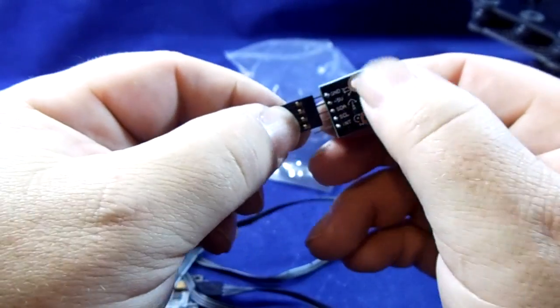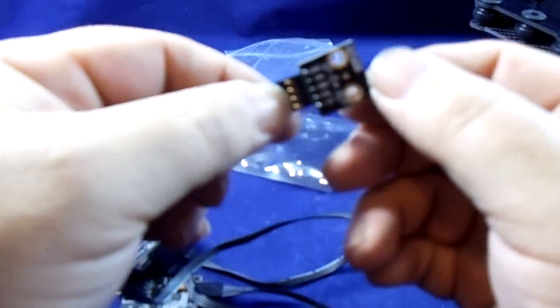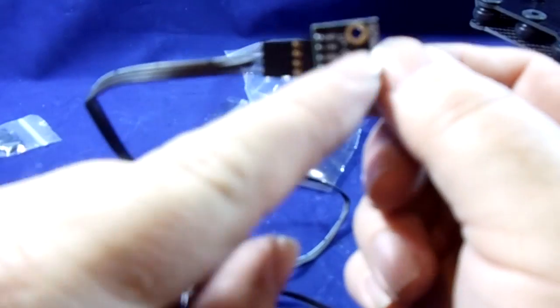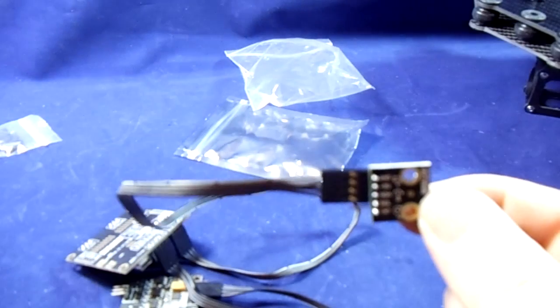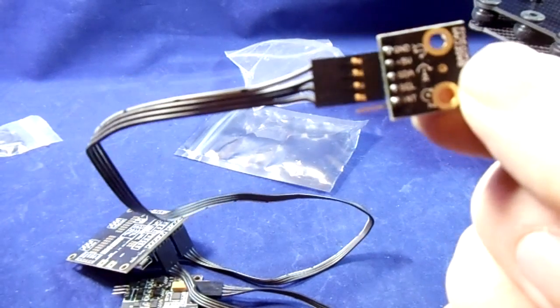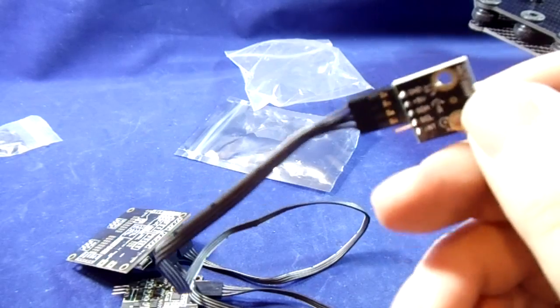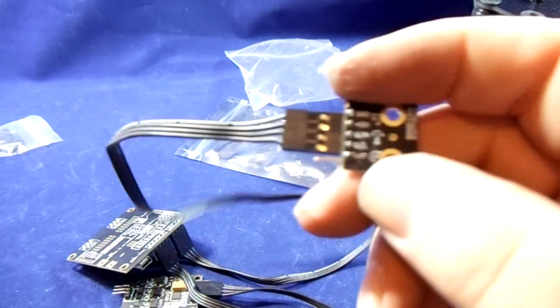On the sensors that you get, you'll notice there's an INT. You don't require it. And you can either snip it off, leave it alone, it's entirely up to yourself what you do.